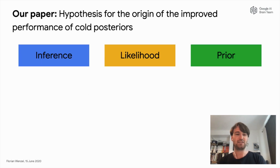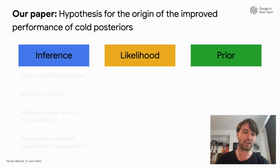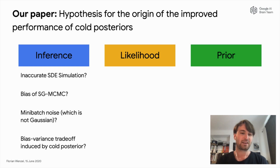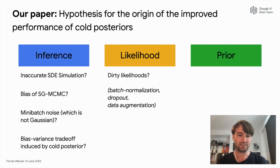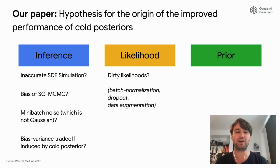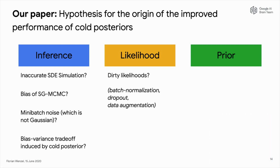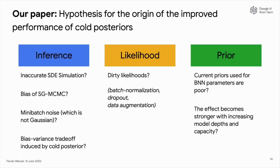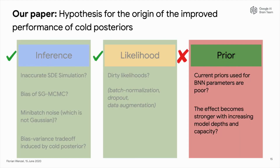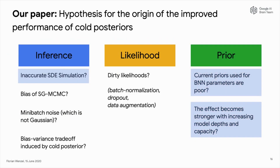In our paper, we study different hypotheses for the cold posterior effect. We look at potential problems with the inference method. And since in modern deep neural network architectures we use techniques like batch normalization, dropout, or data augmentation — which lead to a non-formal likelihood function — maybe this causes problems. We also look into potential problems with the prior. To give you a spoiler: in the paper, we find that most likely problems with the prior are linked to the cold posterior effect. In this talk I will concentrate on three hypotheses: inference and then the prior.